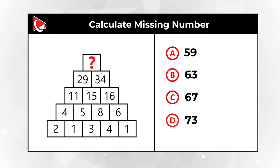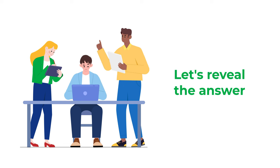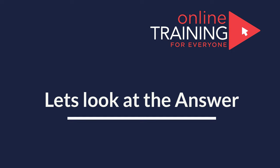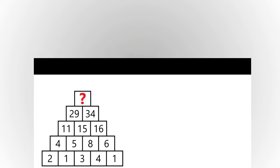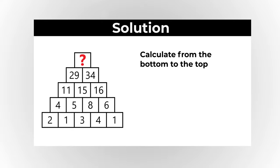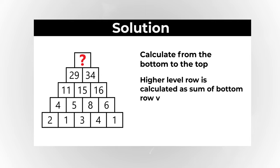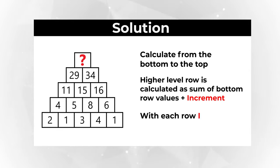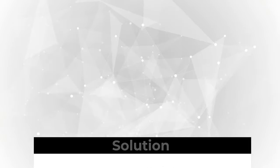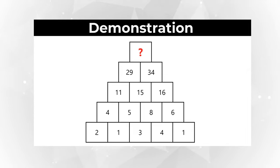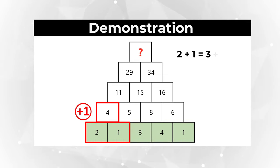Give yourself 10 to 15 seconds to see if you can answer this question. The solution is to move from the bottom to the top. The higher row is calculated as the sum of the two bottom values plus an increment, and the increment increases with each row by 1. For example, 2 plus 1 equals 3, plus the increment of 1, gives 4. Next: 4 plus 5 equals 9, plus the increment of 2, gives 11.